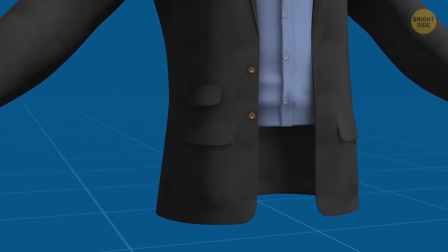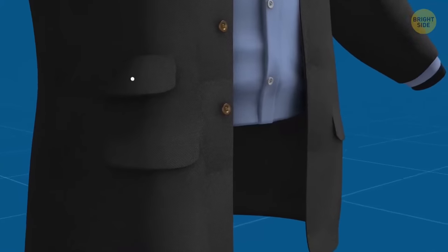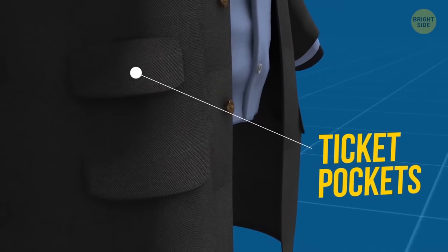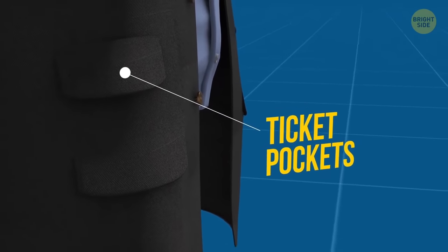A dinner jacket has small pockets above regular ones. They're called ticket pockets, and gentlemen wearing such jackets can quickly pull the tickets before getting on a train.